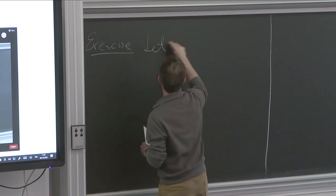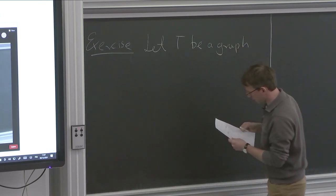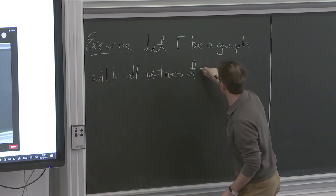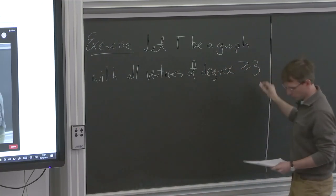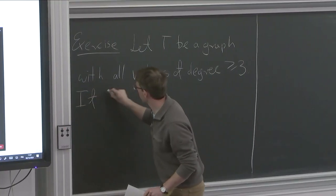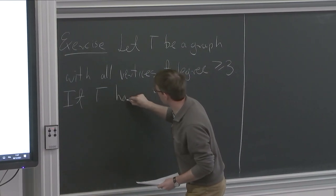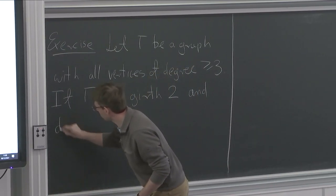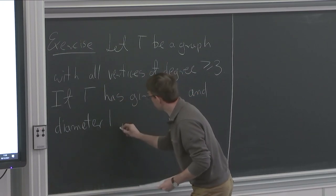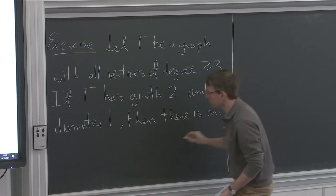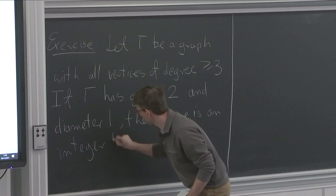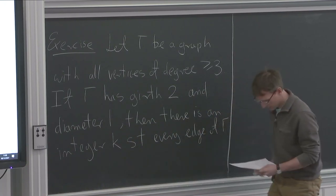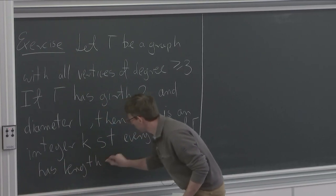Suppose we have a graph Gamma. Let Gamma be a graph with all vertices of degree at least 3. And then, if Gamma does not have short cycles — so if Gamma has girth 2 but is pretty small — and diameter 1, then there is an integer K such that every edge of Gamma has length precisely 1 over K.